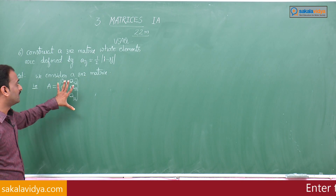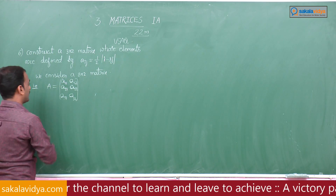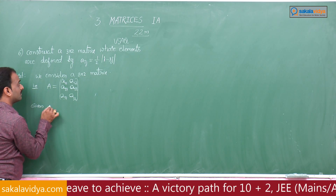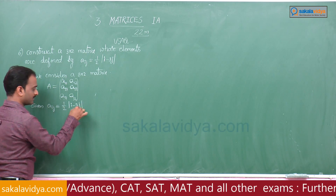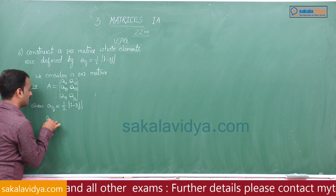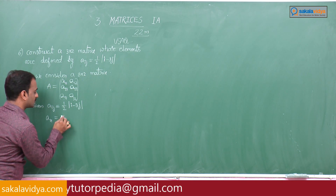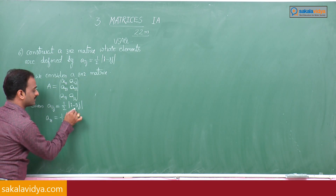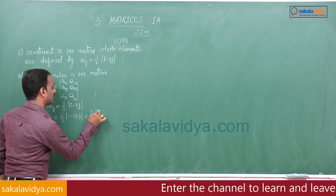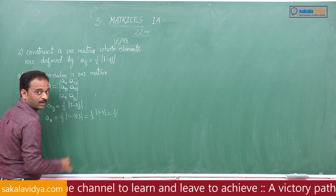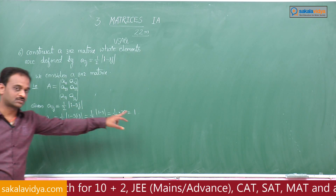The standard form of a 3 cross 2 matrix is: a11, a12, a21, a22, a31, a32. Now we have to find these values using the given condition aij equals 1 by 2 into i minus 3j. For a11, i equals 1 and j equals 1, so we get 1 by 2 into mod of 1 minus 3, which is 1 by 2 into mod of minus 2, that is 1 by 2 into 2, giving a11 equals 1.